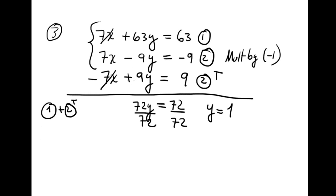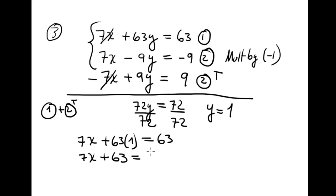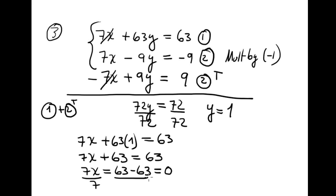Now substituting y equals 1 into equation 1: 7x plus 63 times 1 equals 63, so 7x plus 63 equals 63, giving 7x equals 0, therefore x equals 0. The ordered pair solution is (0, 1).